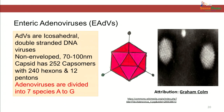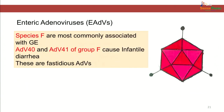Coming to the third group — enteric adenoviruses. Adenoviruses are known to cause infections in humans like respiratory tract infections and conjunctivitis, besides diarrheal illness. Adenoviruses are DNA viruses which are non-enveloped, with icosahedral symmetry and double-stranded DNA. Human adenoviruses are about 70 to 100 nanometers in size. The capsid has 252 capsomeres with 240 hexons and 12 pentons. Adenoviruses are divided into 7 species A to G, of which species F — adenoviruses 40 and 41 — is associated with gastroenteritis and causes diarrhea in infants. These viruses are fastidious unlike other adenoviruses.